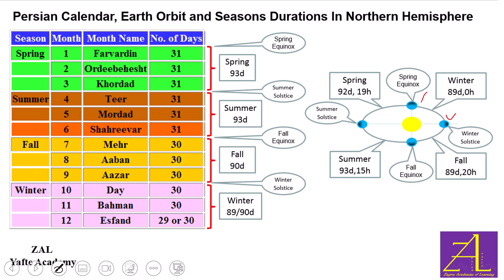As shown here, the Earth has four important orbital positions identified by two equinoxes and two solstices. The orbit is elliptical, with the Sun being closer to one side. It takes the Earth 89 days to go from winter solstice to spring equinox, 92 days and 19 hours for the next segment, 93 days and 15 hours for the following, and 89 days and 20 hours between fall equinox and winter solstice. Rounded, these correspond to what Omar Khayyam estimated.